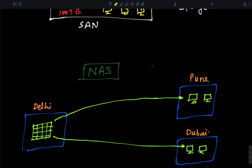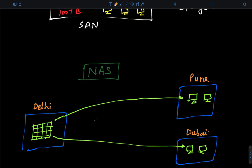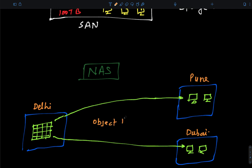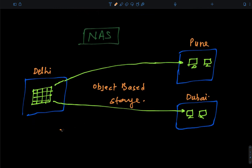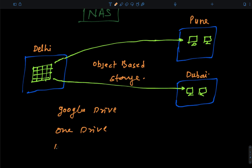NAS is considered object-based storage. In object-based storage, you are unable to create a partition on your system. You can only create partitions with SAN storage — that's why SAN is block-based. With NAS storage, you upload and download data — it's just like a shared folder. Examples of NAS storage include Google Drive, OneDrive, and iCloud. These are all examples of object-based NAS storage.